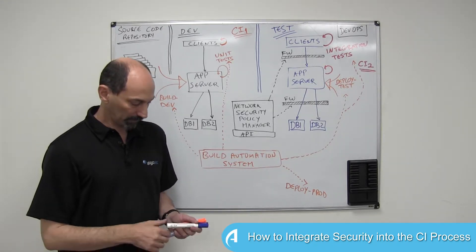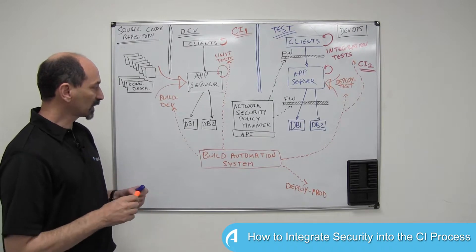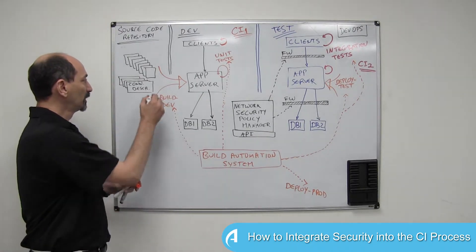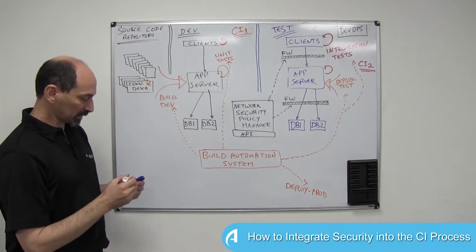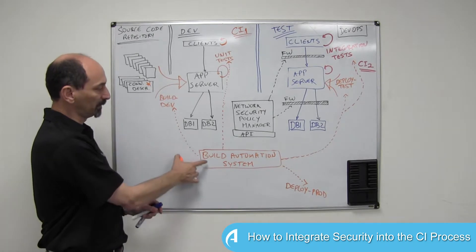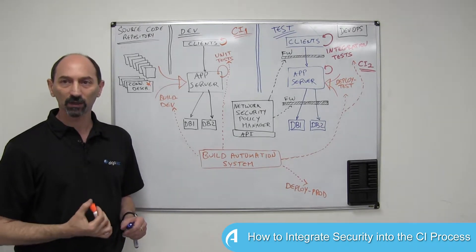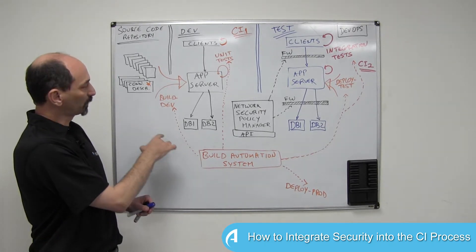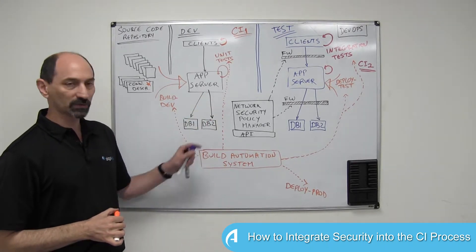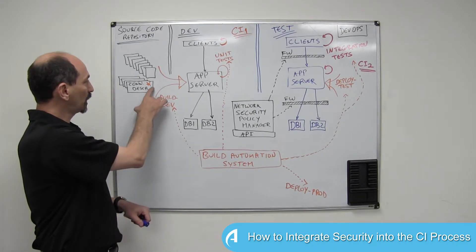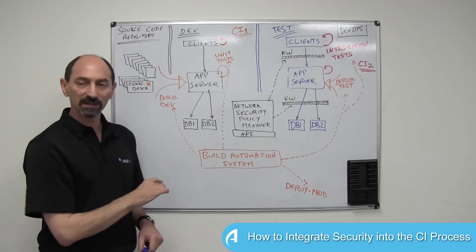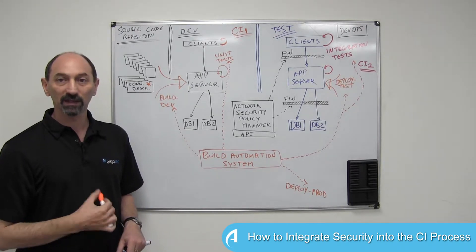How can we avoid this failure? My suggestion is to maintain within the source code repository this additional descriptor file, which I call the connectivity descriptor file. This is a file that the build automation system can recognize. So whenever a developer adds functionality and adds code to request connectivity to the extra database, they would also update the descriptor file. And now the build automation system can be aware of this change and take action.